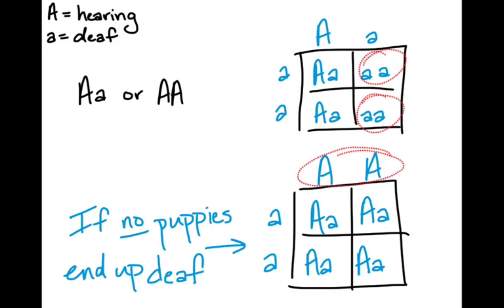But if some of the puppies end up deaf, even one, because remember, these are just odds. You could have five puppies that can hear and one puppy that's deaf. You're still looking at a heterozygous parent crossed with that recessive individual. Because remember, you would know that a deaf dog has the genotype of two little a's or two recessive alleles.